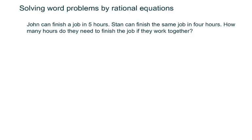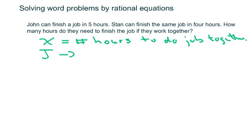So we're gonna let X be the number of hours to do the job together. And then what we're gonna get, we have John can do the job per hour. He can do one-fifth of the job per hour.